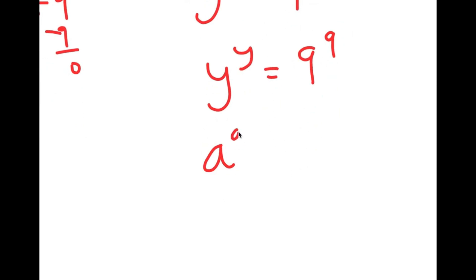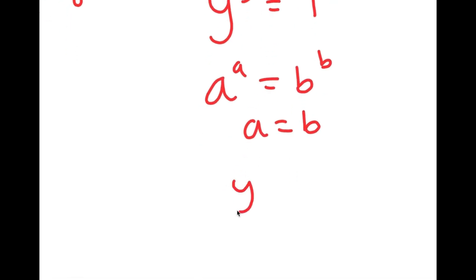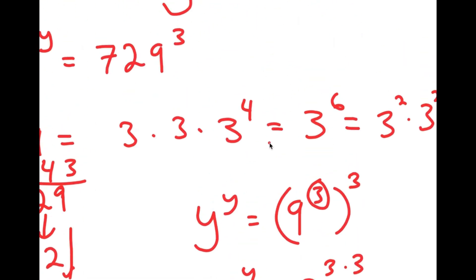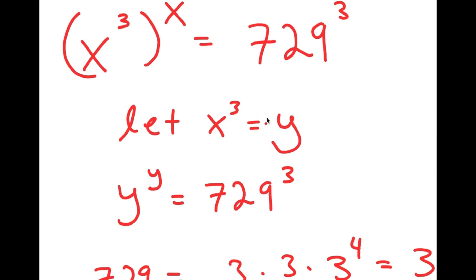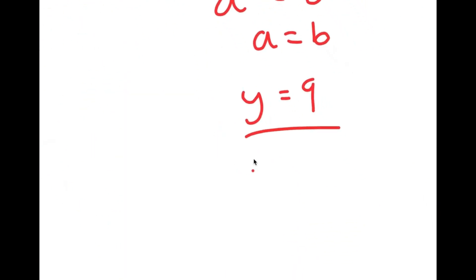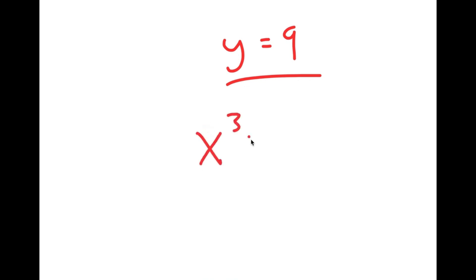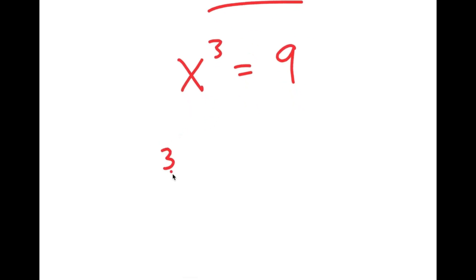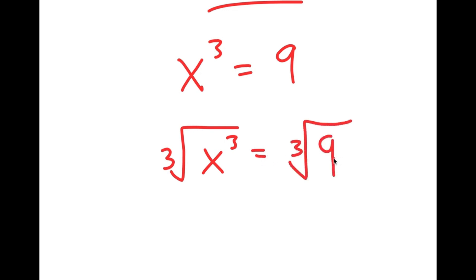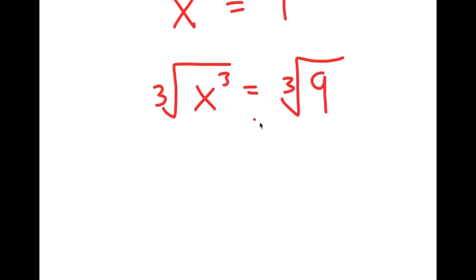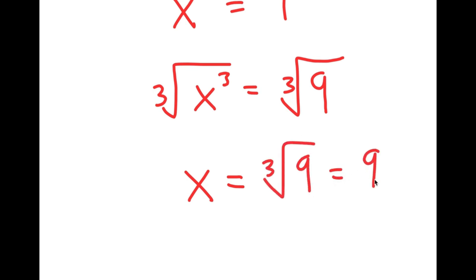So I get y to the power of y is equal to 9 to the power of 9. Now I can use the property: if a to the power of a is equal to b to the power of b, this means that a equals b. So in this case, y is equal to 9. Now, recall how I let x to the power of 3 equal to y, meaning x to the power of 3 is equal to 9. To solve this, I take the cube root on both sides, so x is equal to the cube root of 9, which is the same thing as 9 to the power of one third.